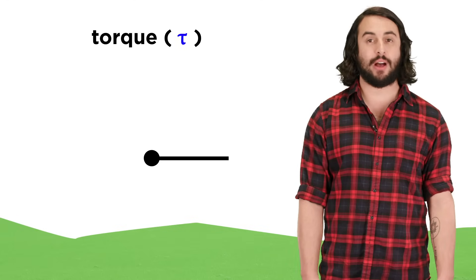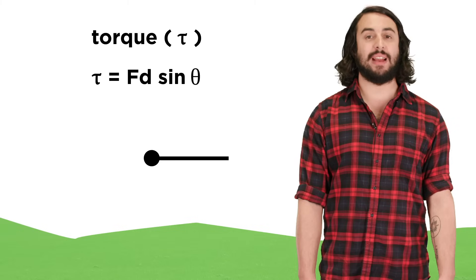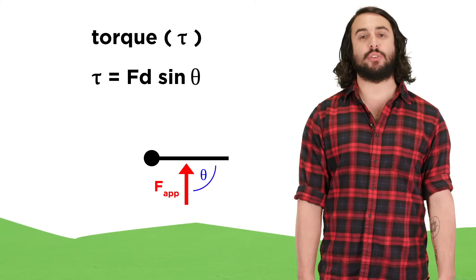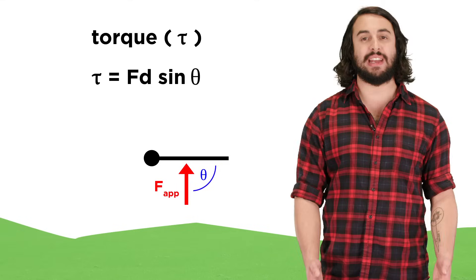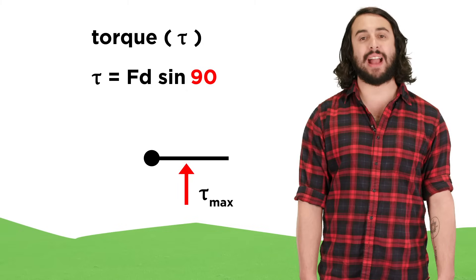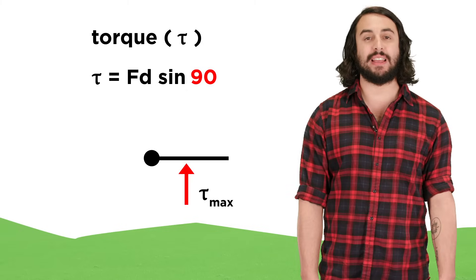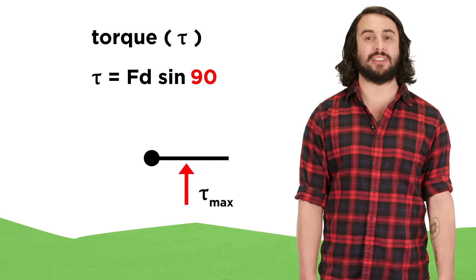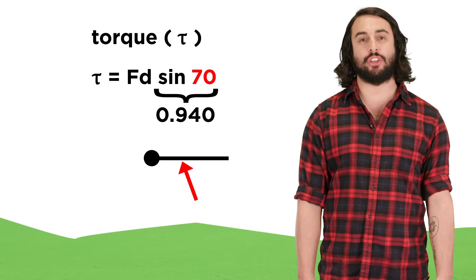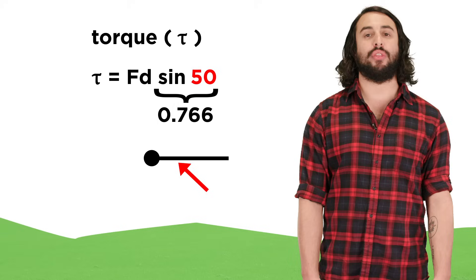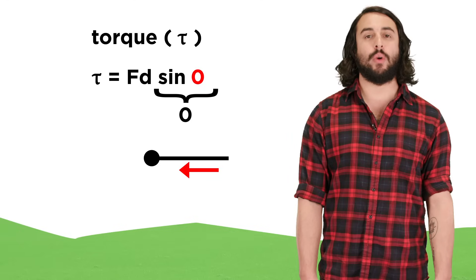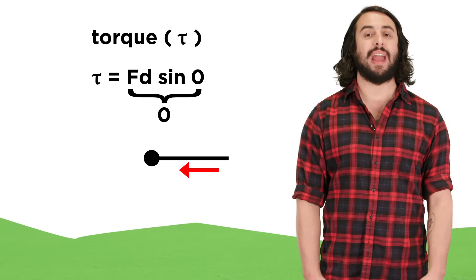Torque, represented by the Greek letter tau, will be equal to the applied force times the distance over which the force is applied, times sine theta, where theta is the angle between the force vector and the plane of the rotating object. Torque will therefore have units of Newton meters, and torque will be at a maximum when the applied force is perpendicular to the plane containing the object, because the sine of ninety degrees is one. Any angle less than ninety in either direction will give a sine value that is less than one, and will therefore diminish the torque, while still producing some motion, until the angle is zero, at which point the whole expression will be equal to zero and no motion can result.